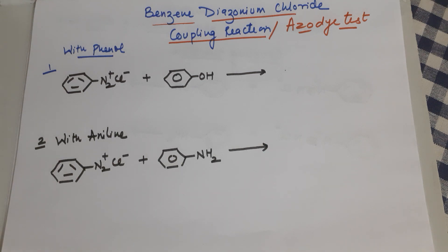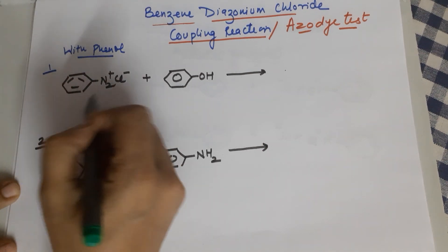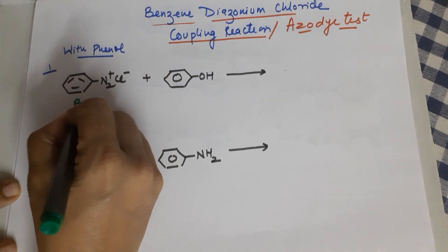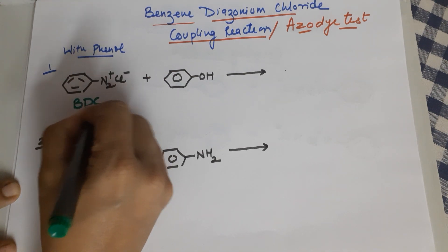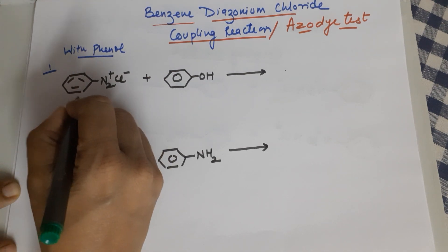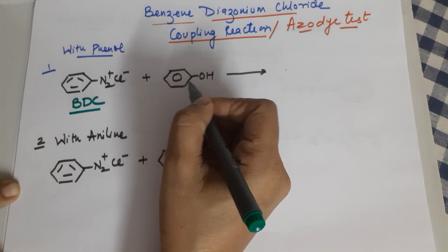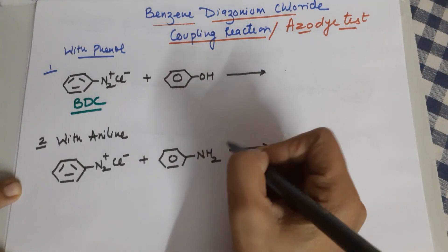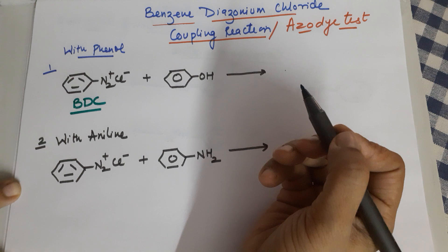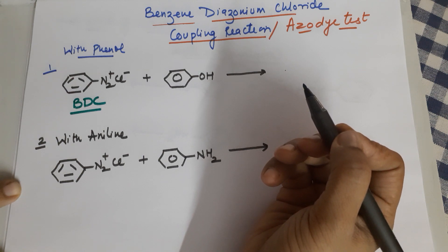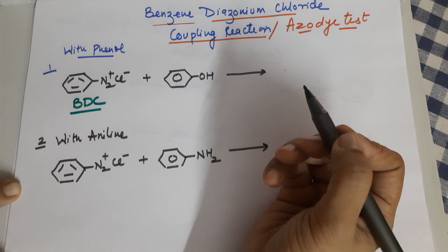In a coupling reaction you have a benzene diazonium chloride — I am writing it as BDC. This reacts with a phenol. There are other options also, but in your syllabus you have phenol and aniline with which you should know how to perform the coupling reaction. In the lab you may also be doing it with alpha naphthol or beta naphthol.